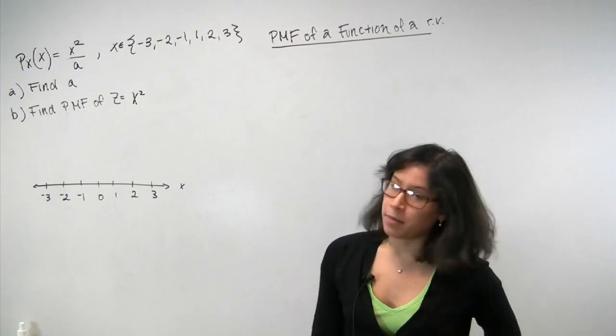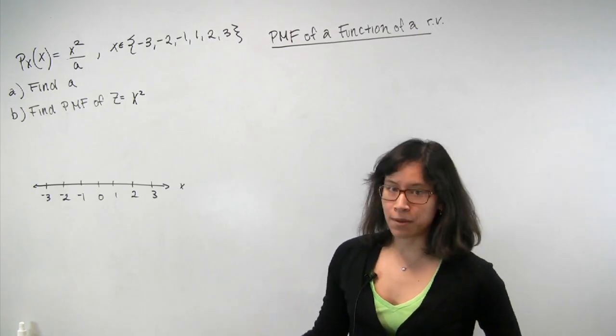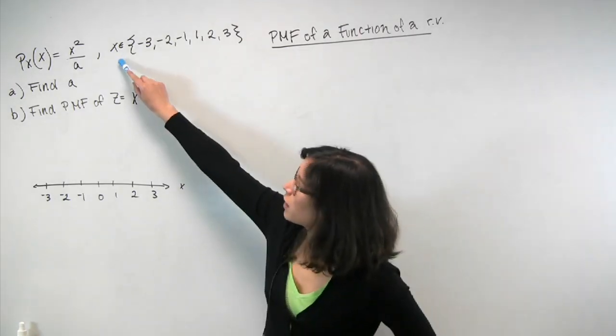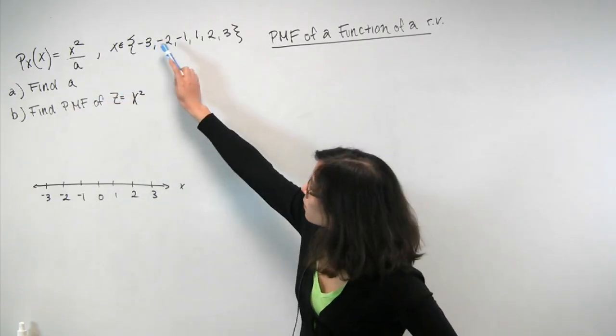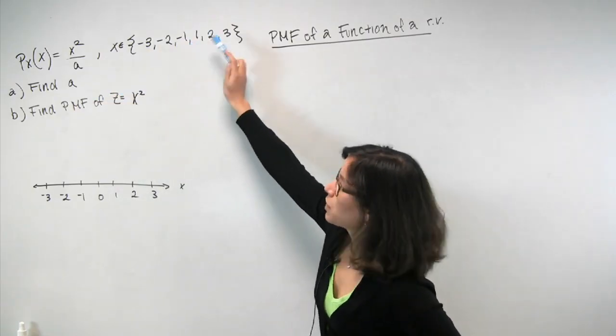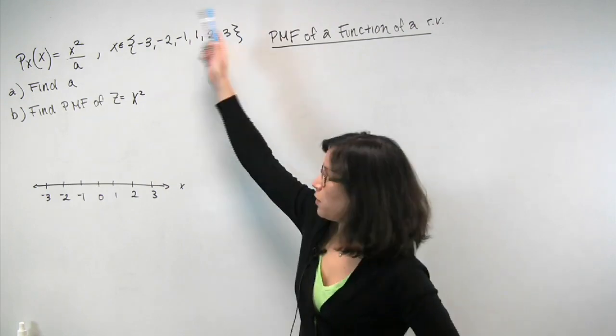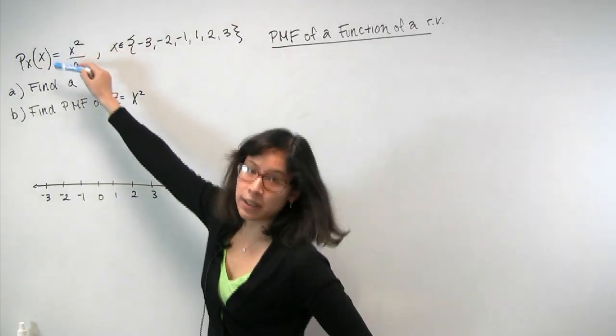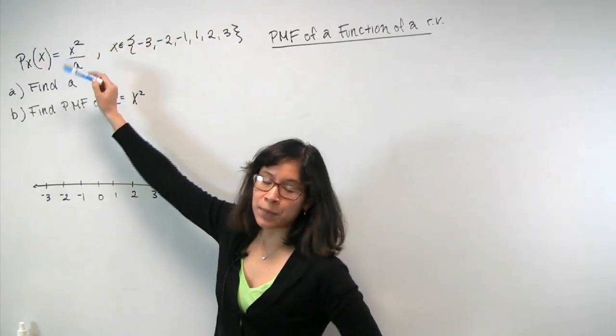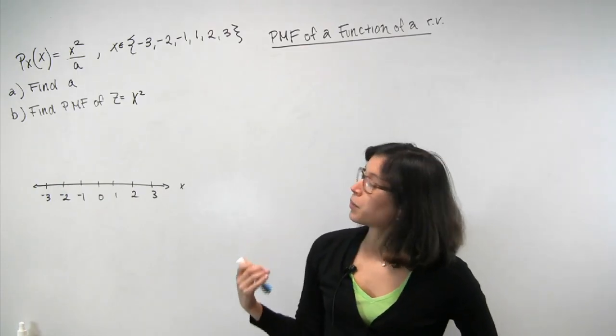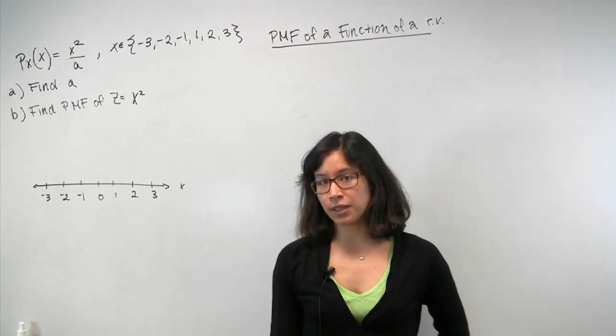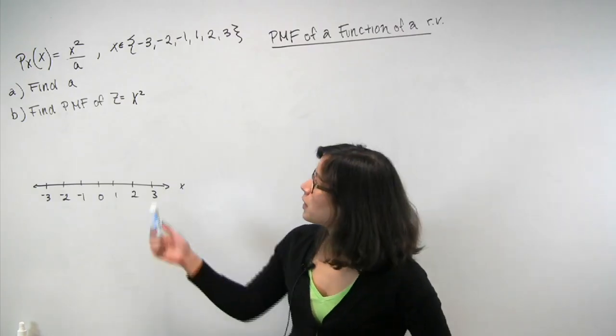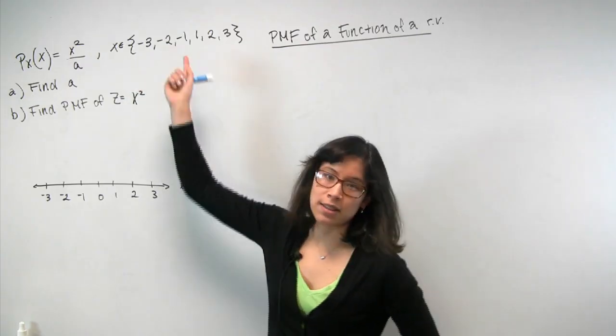The problem statement gives you the PMF for a random variable called x. So we're told that there's this random variable x that takes on values minus 3, minus 2, minus 1, 1, 2, and 3. And for each of those values, the probability mass lying over that value is given by this formula, x squared over a. Now, I didn't write it here to save room, but we're also told that a is a real number that is greater than 0. And we're told that the probability of x taking on any value outside of this set is 0.